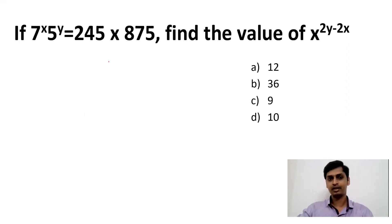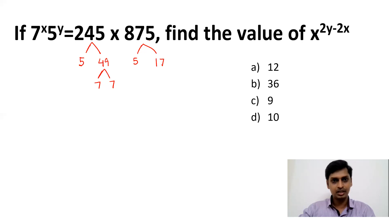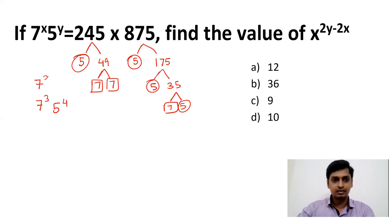We can write 245 as 5 × 49, and 49 = 7 × 7, so 245 has one 5 and two 7s. And 875 can be written as 5 × 175, then 175 = 5 × 35, and 35 = 7 × 5. So 875 has three 5s and one 7. Combined: 245 × 875 = 7^3 × 5^4.